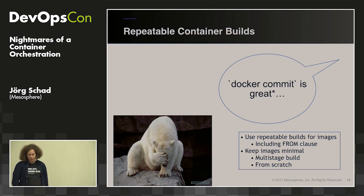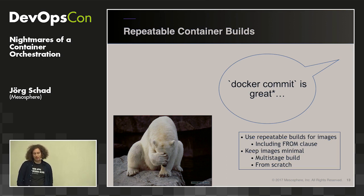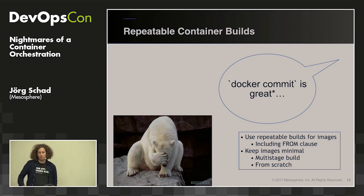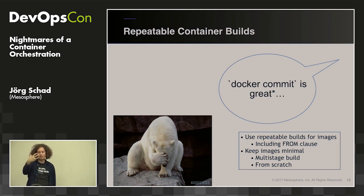This should be part of your infrastructure as code. Repeatable builds should also include the FROM clause — don't pull from 'ubuntu:latest' in FROM, because that might change and break your repeatable build. In general, try to keep images minimal.